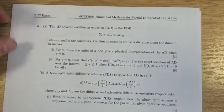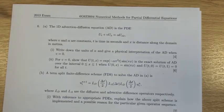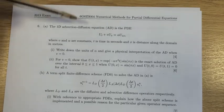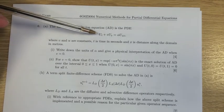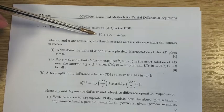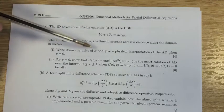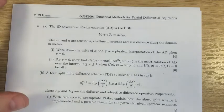This is a solution to question 6 from the 2013 PDEs exam. This is the question that gives you the 1D advection-diffusion equation. Part 1 asks you to write down the units of alpha and give a physical interpretation when V equals 0.